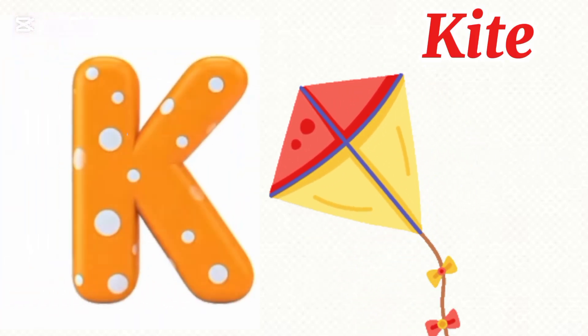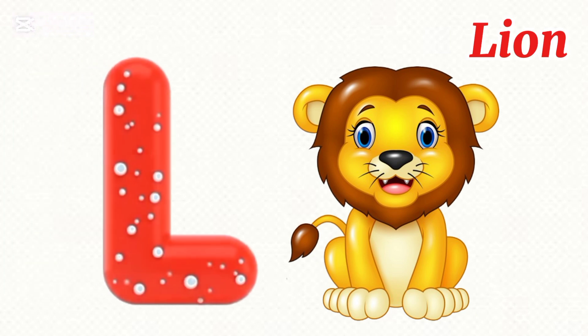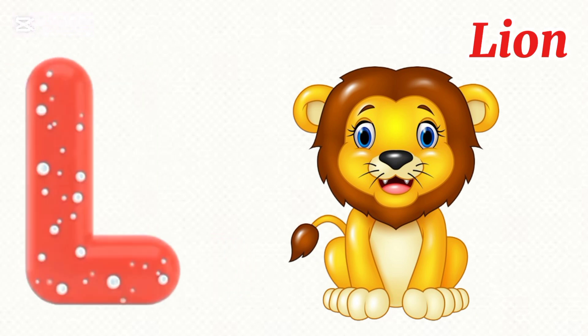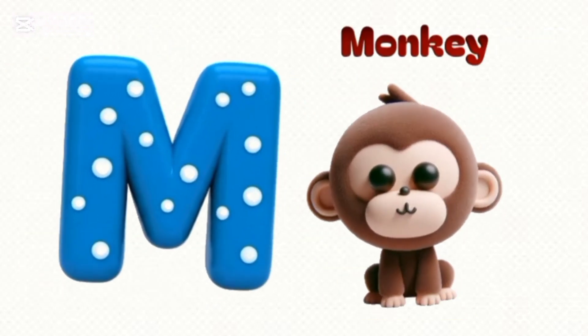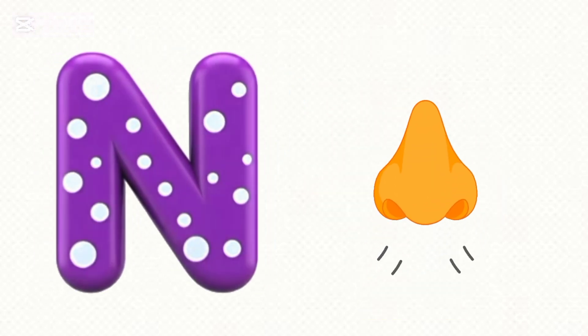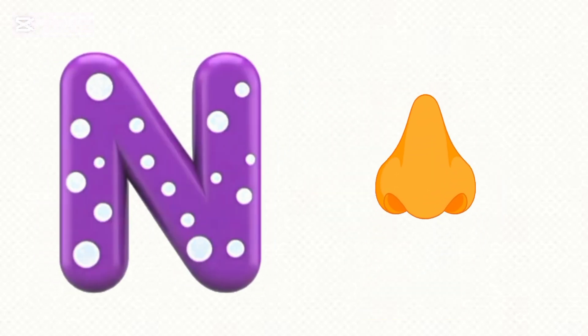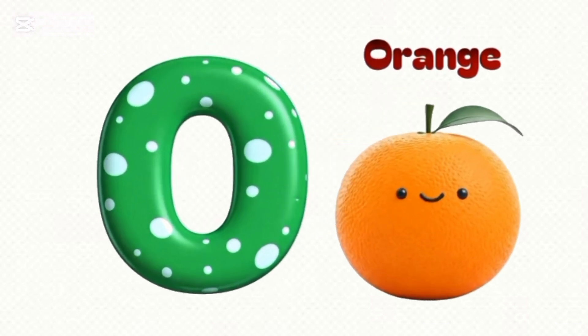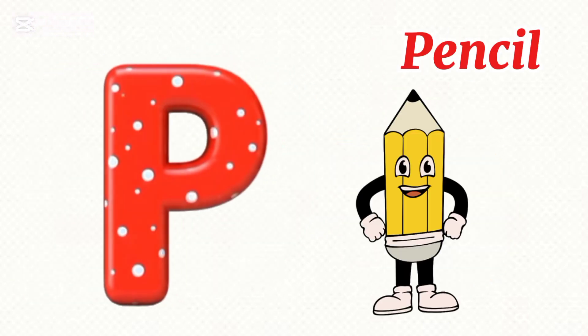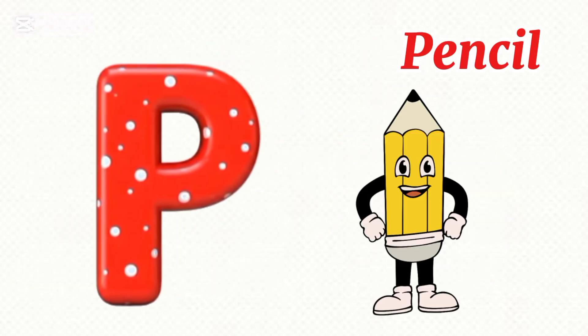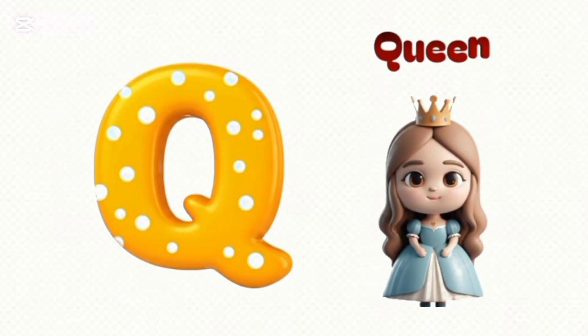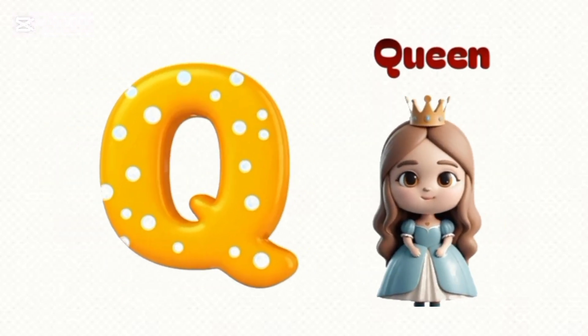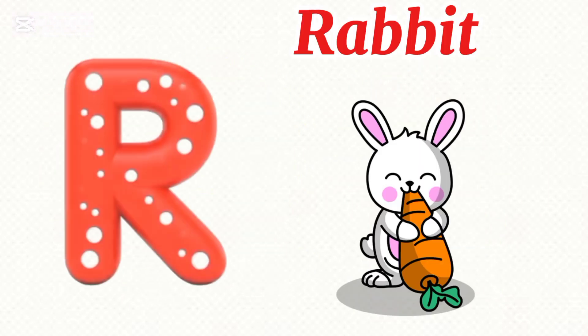K is for kite, kite, kite. L is for lion, la-lion. M is for monkey. N is for nose, nose, nose. O is for orange, o-o-orange. P is for pencil, pencil. Q is for queen, queen, queen.